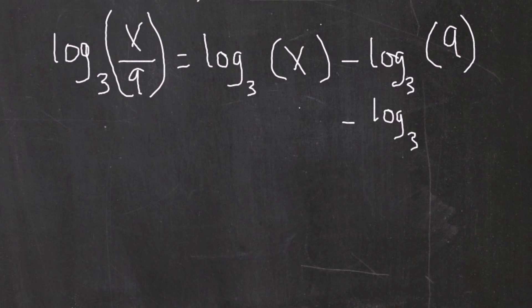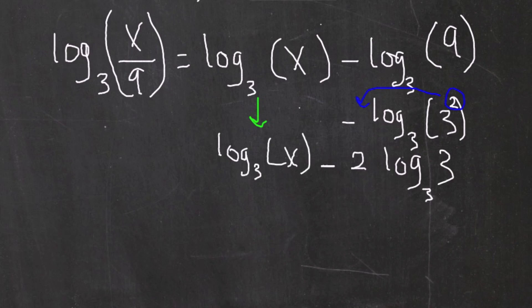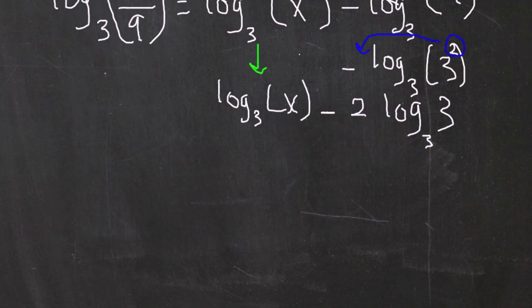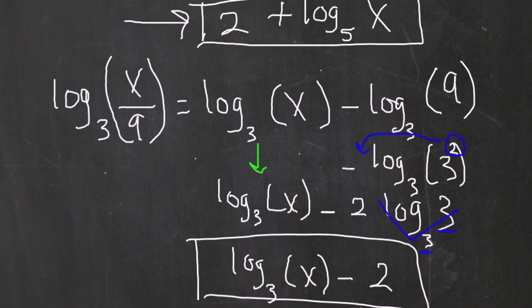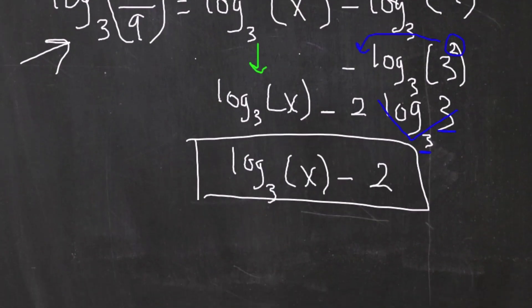We can simplify log base 3 of 9 since 9 is 3 squared. Using the power rule, the exponent 2 comes to the front: 2 · log base 3 of 3. Since log base 3 of 3 equals 1, that simplifies to 2. So the final answer is log base 3 of x minus 2, which is log base 3 of x/9 expressed as a difference of logarithms.